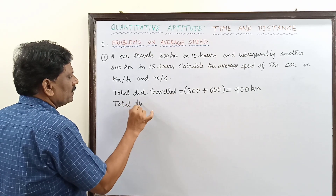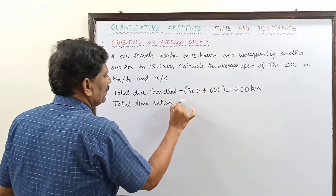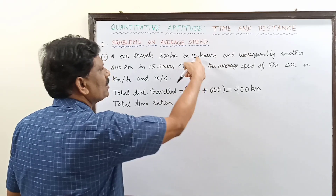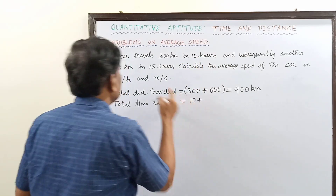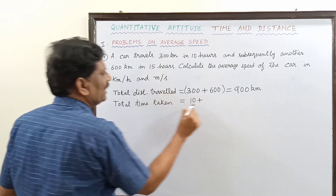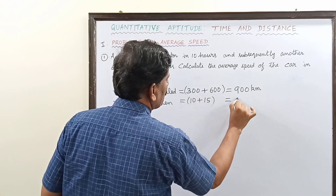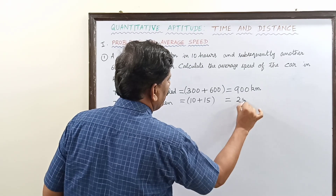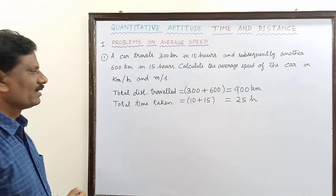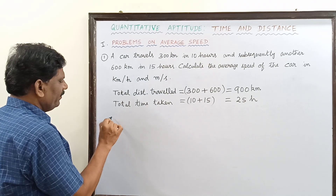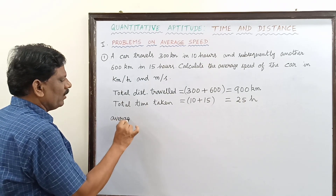And for this, what is the total time taken by the car? The total time taken is equal to 10 hours first, then 15 hours next. So 10 plus 15 is equal to 25 hours.